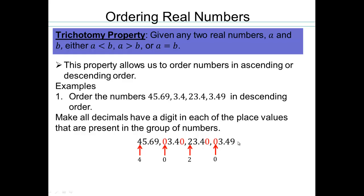So anywhere that I was missing a digit, I inserted a 0 in its place. Now look — we have 4, 0, 2, and 0 in the tenths place. Clearly, 0 is smaller than 2, so these two numbers would have to be switched. So you start with the largest place value. In our case, that is the tenths place.